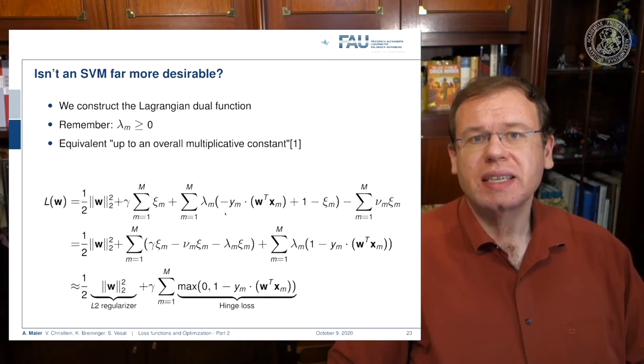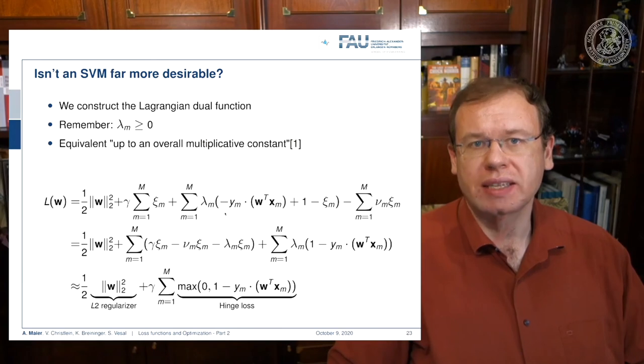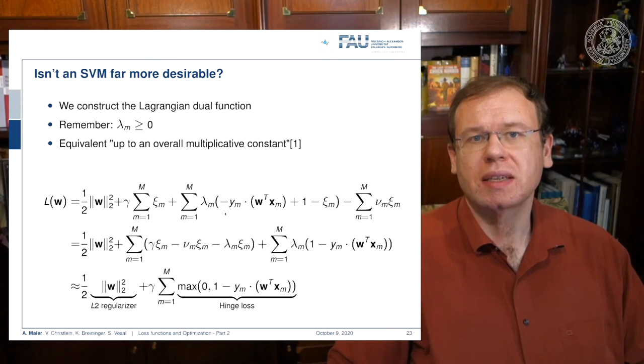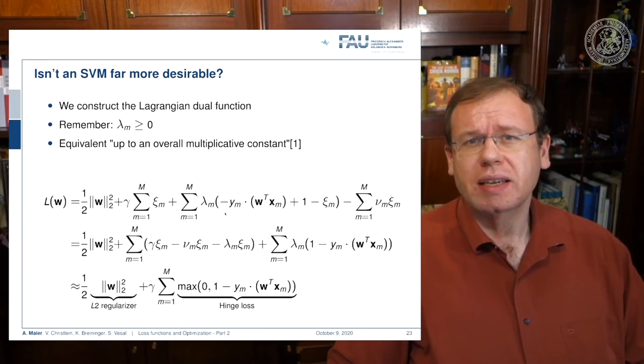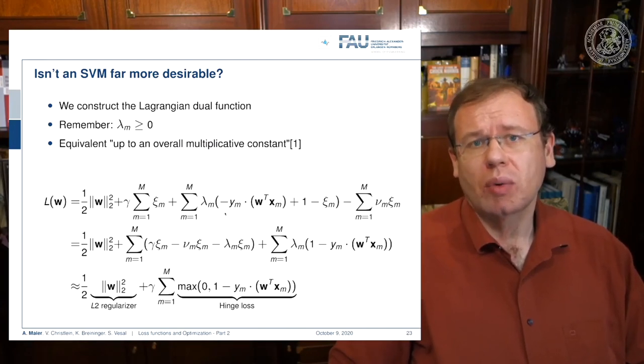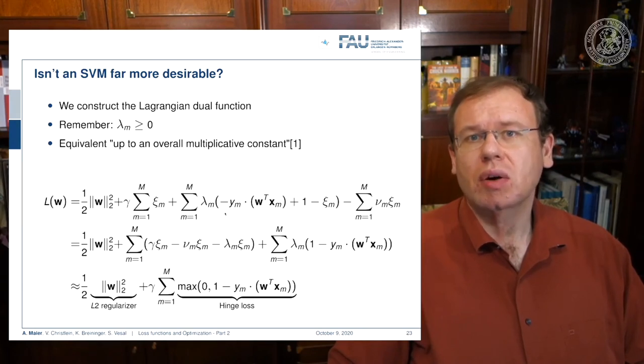Now you can see that we can very elegantly express this as a hinge loss. So you can show that the support vector machine and the hinge loss formulation with those constraints are equivalent up to an overall multiplicative constant as shown in reference one. If people say, oh, you can't do deep learning, take an SVM instead, well, if you choose the right loss function, you can also incorporate a support vector machine into your deep learning framework. That's actually a quite nice observation.